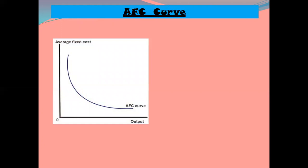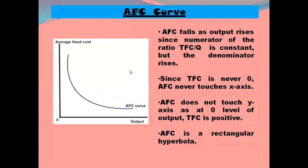Now we come to the AFC curve. Output is measured on the horizontal axis and average fixed cost on the vertical axis. TFC is always constant — in the table it is constant at 60 — and output is rising. So the denominator is rising while the numerator is fixed and constant, meaning the ratio is decreasing. Because AFC falls as output rises, since the numerator is constant but the denominator is rising, AFC decreases throughout.